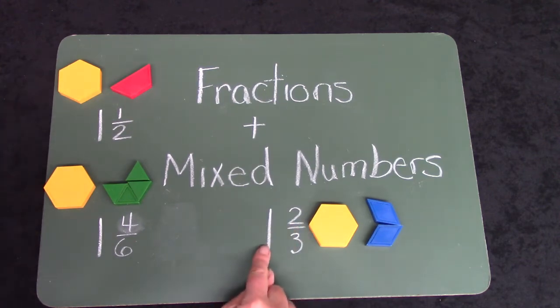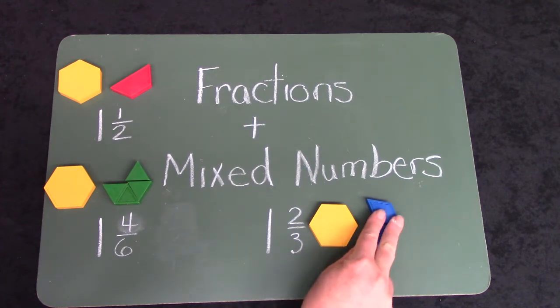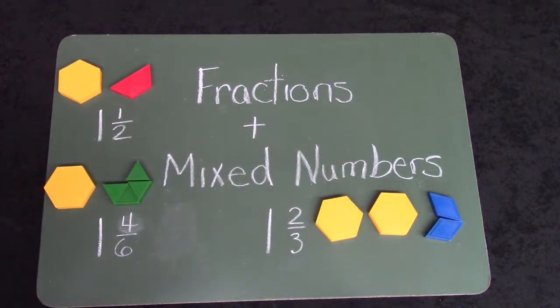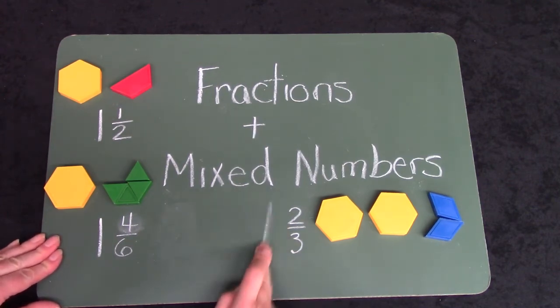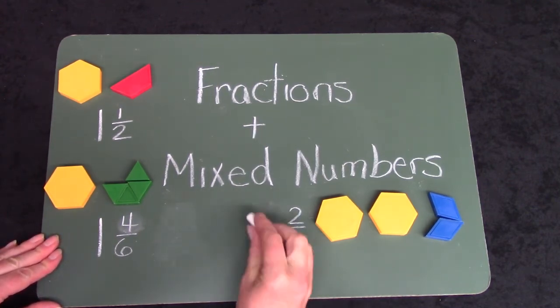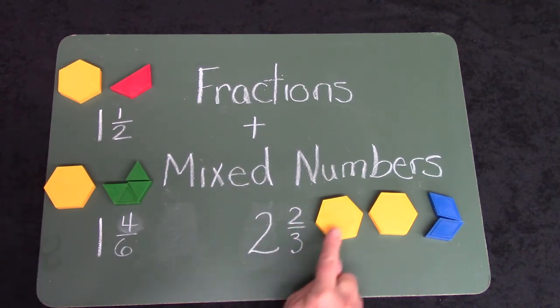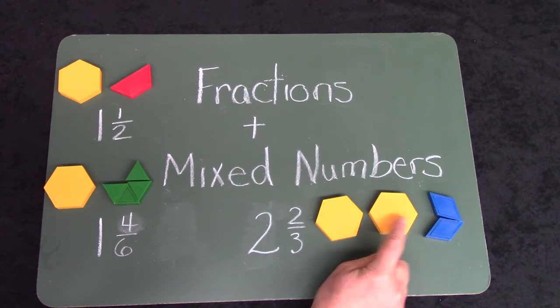What if I didn't have one and two thirds hexagons? What if I had another one? Which number would change? Would it be my whole number or would it be my fraction? You're right. It would be my whole number. I'm going to erase my one and put a two. Now I have two hexagons and two thirds of a hexagon.